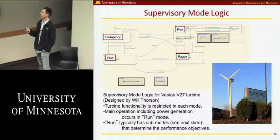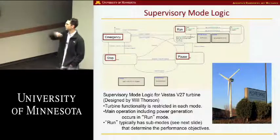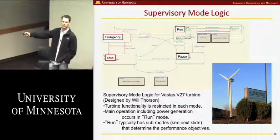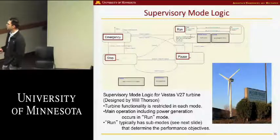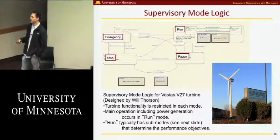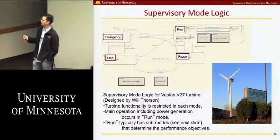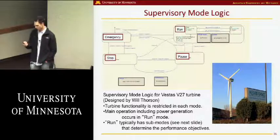If someone presses an emergency stop button while the turbine is running, it immediately transitions into the emergency state — blades move to a safe configuration, a brake is applied to the rotor, and various protective actions occur. When you turn the turbine on, you sequence through the various states and hopefully get into the run state, where the turbine starts turning the blades. Once it starts producing power at 60 Hz, you connect to the grid. What I'll tell you about for the rest of the class is what happens in this run state — actually controlling the turbine and producing power.